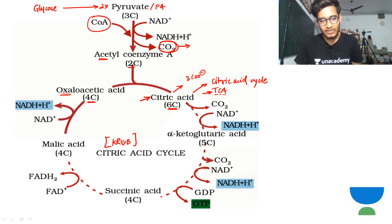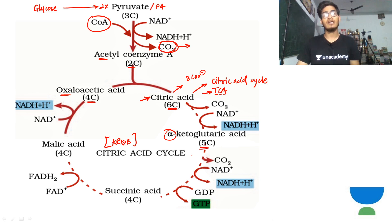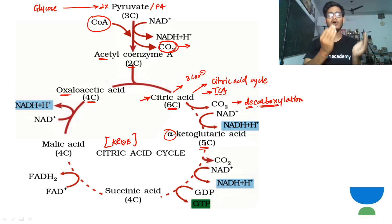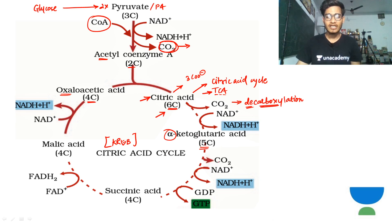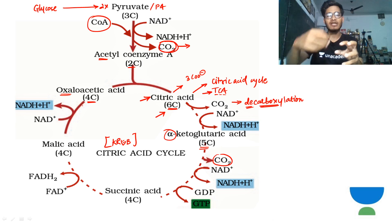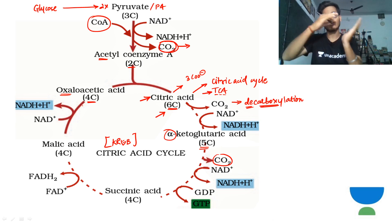Alpha-ketoglutarate is the only 5-carbon product in the cycle. To form a 5-carbon product from citric acid, one carbon must be removed - again through a decarboxylation reaction. Decarboxylation means losing carbon dioxide. So CO2 is released from the 6-carbon compound, leaving a 5-carbon compound. Again, decarboxylation occurs, so 5 minus 1 equals 4 - the 4-carbon compounds continue, and these 4-carbon compounds eventually become oxaloacetate again. Then the cycle repeats.